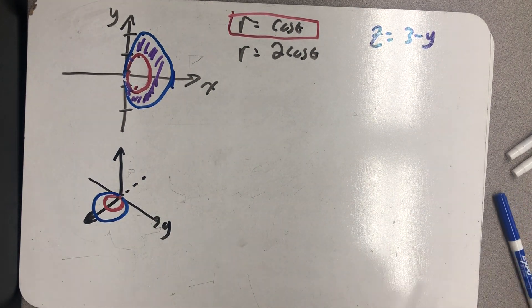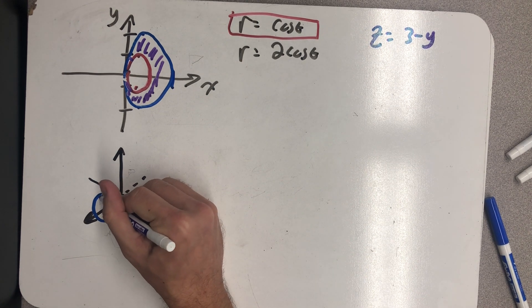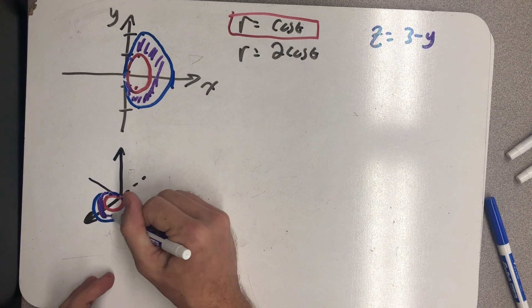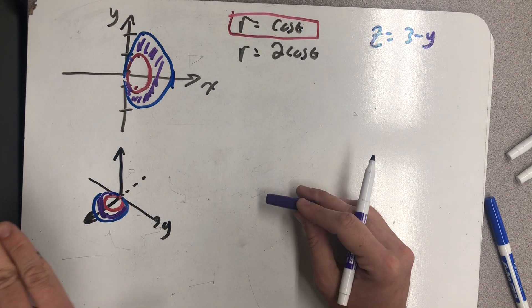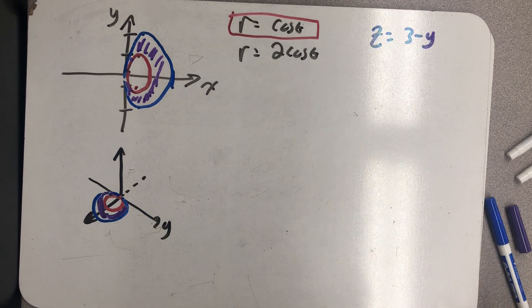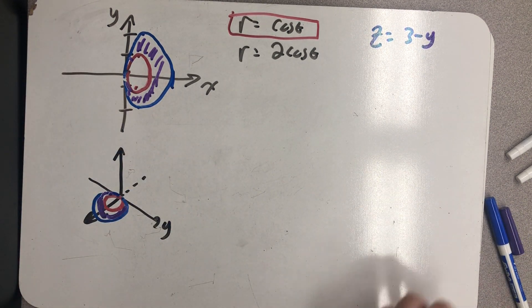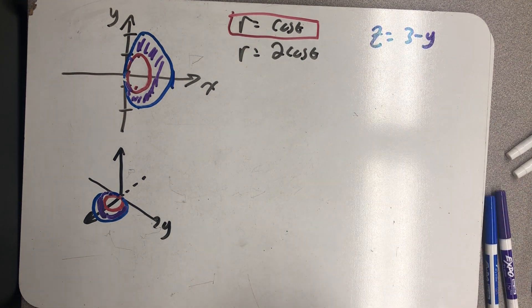I have the region I've shaded in purple, which is going to come up. Every point in there kind of comes up out of that and it's going to hit a plane that's slanted. All right, so actually this way.